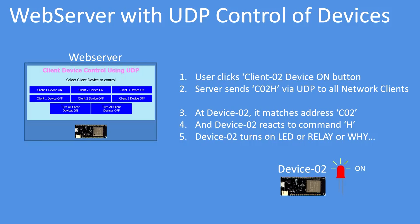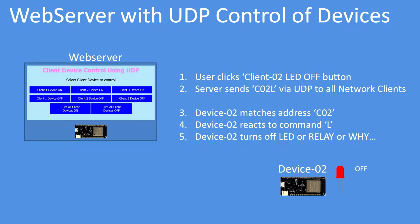For example, with client two, pressing the device on button causes the server to send 'co2 h' to all UDP clients. If the client matches the address 'co2', it reads the command — in this case 'h' — and actuates the LED or relay. Similarly for turning off: the server sends 'co2 l', the client matches address 'co2', gets the command 'l' for low, and turns off the LED or relay.